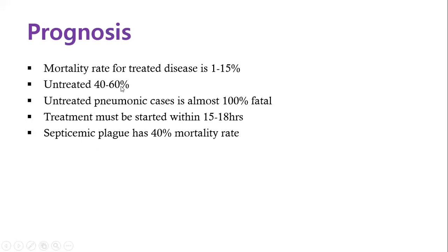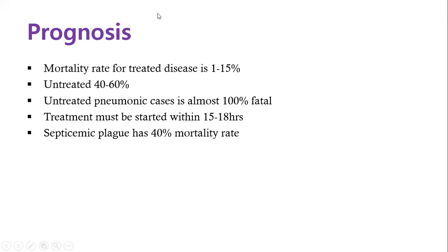If untreated, fatality is high — 40 to 60 percent death rate. With treatment, the fatality rate goes down significantly. However, pneumonic plague if untreated has a 100 percent fatality rate, and treatment must be started within the first day. Septicemic plague has a 40 percent mortality rate. These are diseases with a very high fatality rate, and if one is affected it becomes a serious problem.